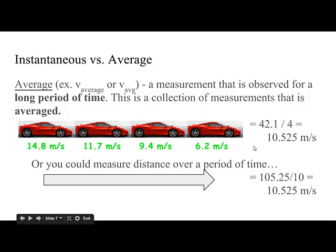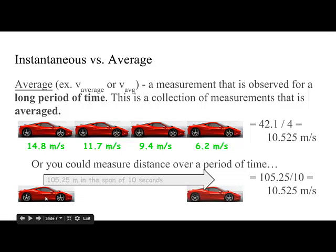There's a different way I could look at this. I could know exactly where my car is at one time, then measure a specific amount of time and find out how far I've gone. For example, I travel 105.25 meters in the span of 10 seconds. I can calculate my velocity: 105.25 divided by 10 seconds tells me that I traveled 10.525 meters per second.